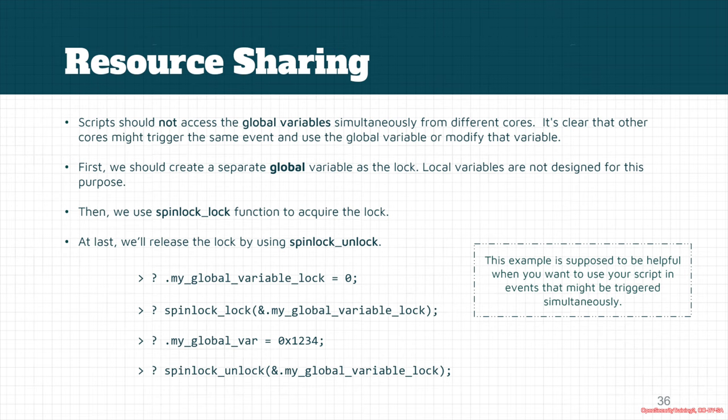For example, I want to access a global variable called dot my_global_variable. I will access it within a spinlock lock function — I'll explain it in more detail later — but for now, we pass dot my_global_variable_lock as the lock. This guarantees that no other core will execute this statement simultaneously. After finishing, I release the lock so other cores get a chance to execute this line of code.